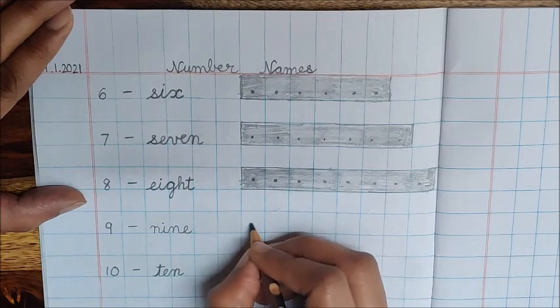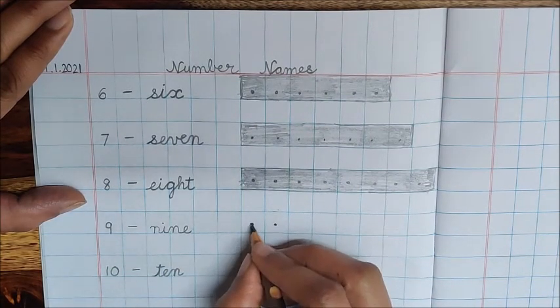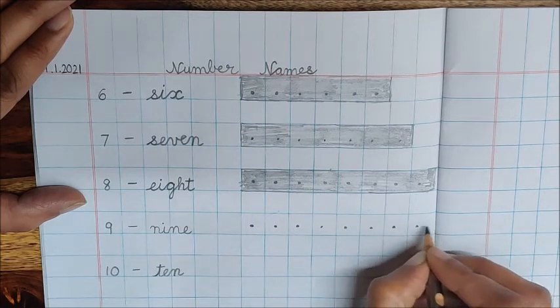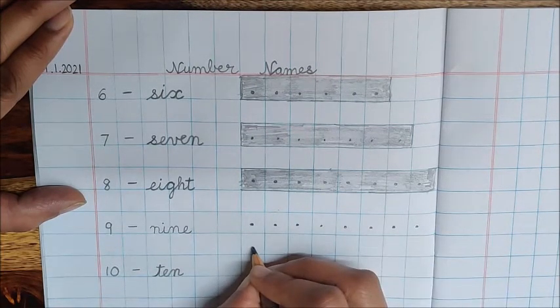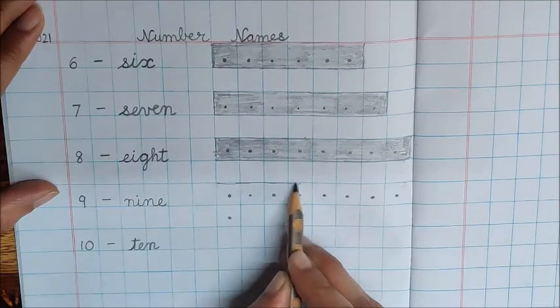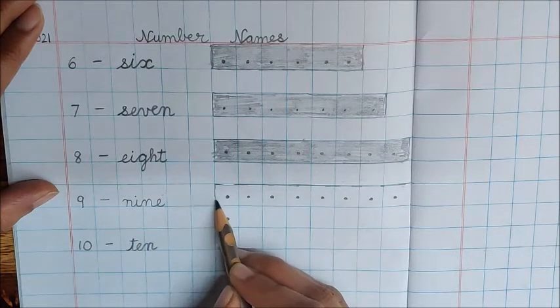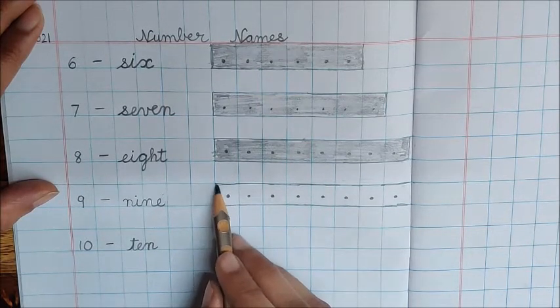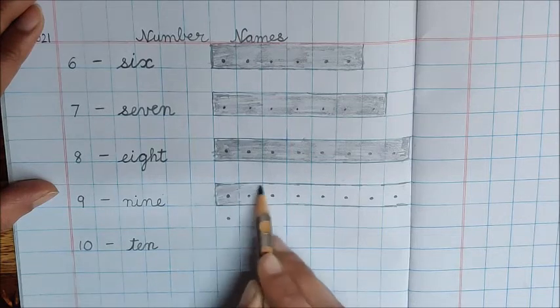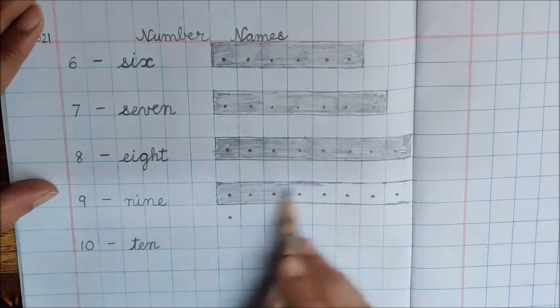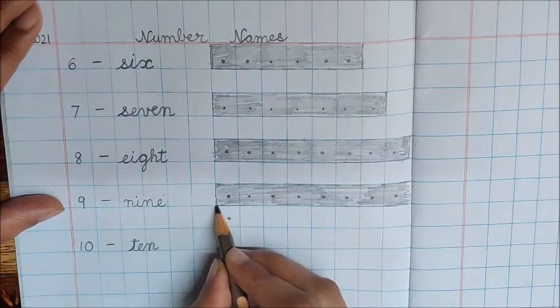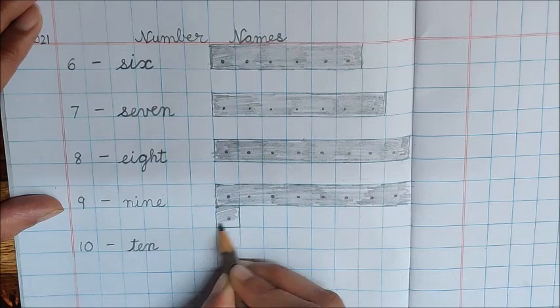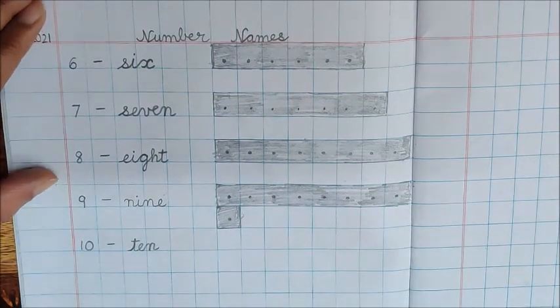Now next number is 9. 1, 2. See, I've left 2 boxes. Now 1, 2, 3, 4, 5, 6, 7, 8. I do not have one more box here. What will I do? I will go to the next line. 9. Make the boundary first. Now shade in these boxes. But these are 8 dots. The 9th dot is here, so shade this box also. Make a boundary first and shade this box also. This is also done.